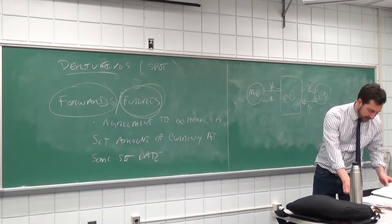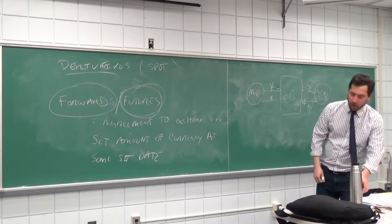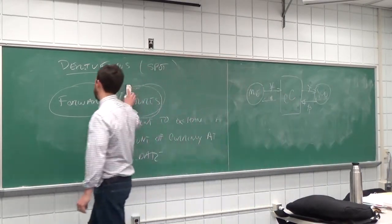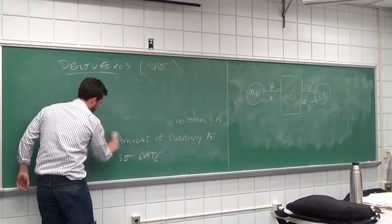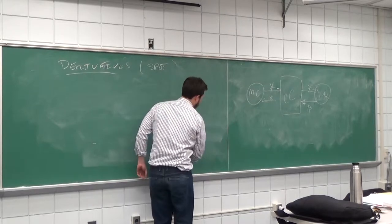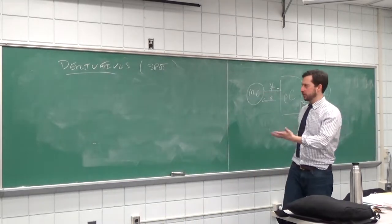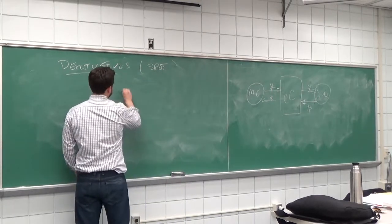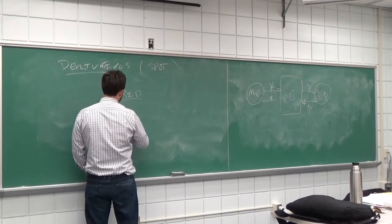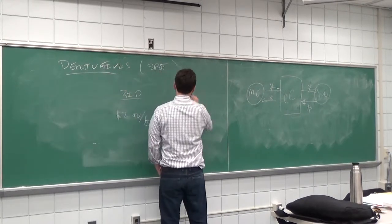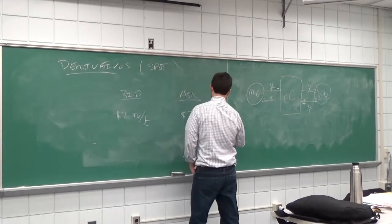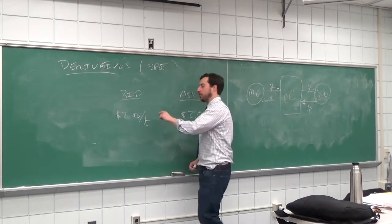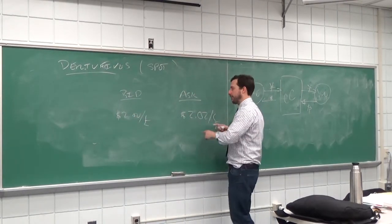Next: the bid-ask spread. Whenever you trade, whether forwards or futures, you run into a bid-ask spread. If I'm buying a futures contract, I'll see something like: the bid is $2.00 per pound and the ask is $2.02 per pound. If I want to buy the pound, it costs $2.02; if I want to sell, I receive $2.00. You always buy for more than you sell — the entity posting these quotes is the market maker.